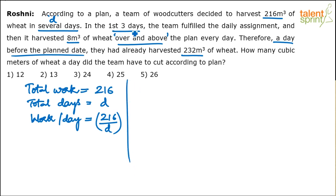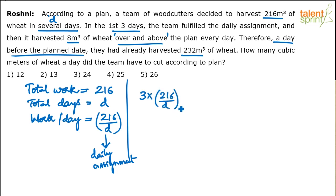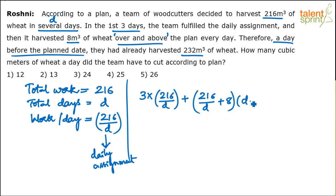For the first three days the team fulfilled the daily assignment — which is 216/d per day. In three days they will do 3 × (216/d). After that, they increased their capacity by 8, so they are doing (216/d + 8) per day. For how many days? In the first part they work for three days; in the second part they do (216/d + 8) per day for (d − 3 − 1) days.